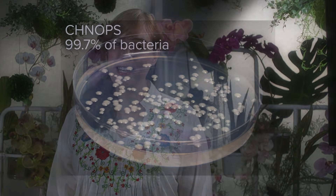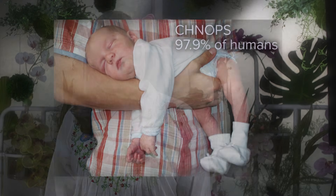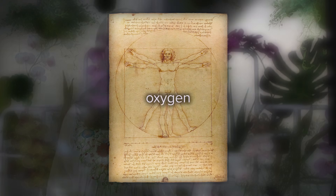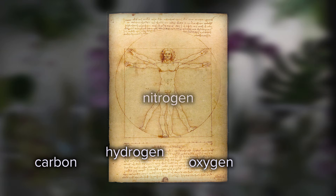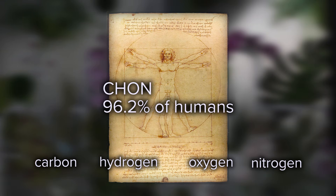CHNOPS make up 99.7% of bacteria, and they make up 97.9% of humans. It takes just four elements — oxygen, carbon, hydrogen, and nitrogen — to make up 96.2% of humans.